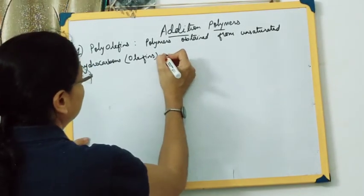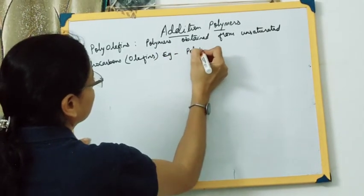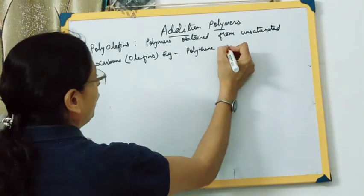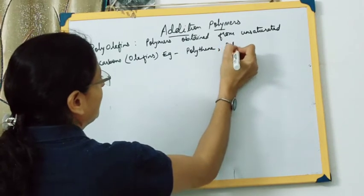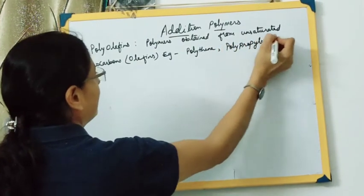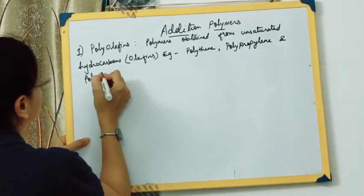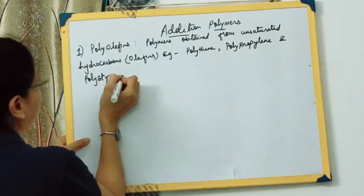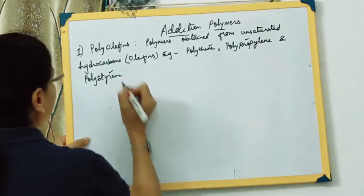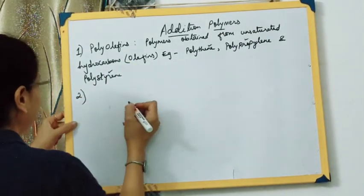Examples of polyolefins we will study here are polythene (also called polyethylene), polypropylene, and polystyrene. The next type of addition polymer is polydienes.